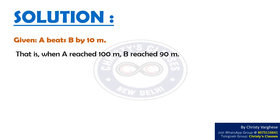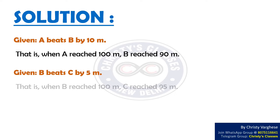It is given that A beats B by 10 meters. That is, when A reached 100 meters, B reached 90 meters. It is also given that B beats C by 5 meters. That is, when B reached 100 meters, C reached 95 meters.